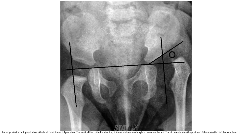Anteroposterior radiograph with the horizontal reference line is shown. The vertical line is Perkin's line, and the acetabular roof angle is drawn on the left. The circle estimates the position of the unossified left femoral head.